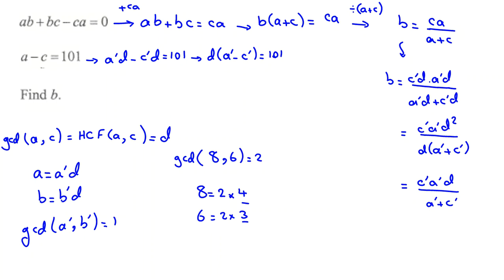It will be D A prime plus C prime. We know GCD of, sorry, here we said A and C, so it's better I should write a prime c prime. C is c prime, a prime, c prime. Okay.